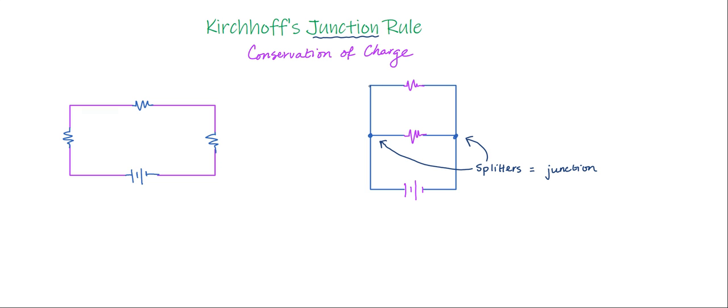Be careful not to consider corners to be junctions or nodes because they are not splits. They're just bends in the wire for drawing purposes. Over here in this circuit, there are no junctions or splits. So we'd say there are no junctions here, and this is going to help us justify something, as we will see at the end of this video.